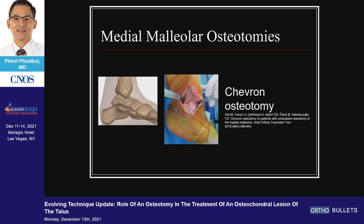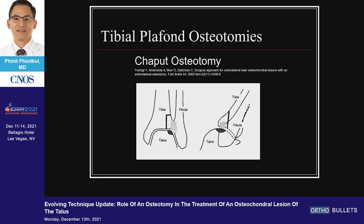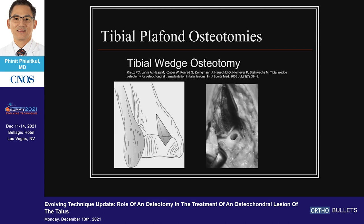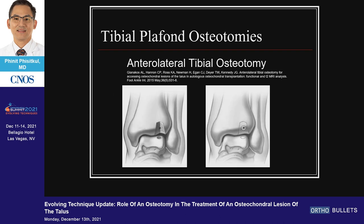You can do a Chevron cut to make it more stable. On the lateral side, you can do a Chaput osteotomy — the anterolateral tubercle of the tibia. From the anterior aspect, you can remove a tibial wedge, or use a wedge in a trapezoidal shape. Keeping in mind, those pieces are going to be free-floating — dead bone, dead cartilage. Make sure you don't drop them on the floor.